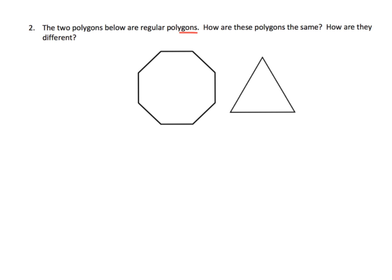It says the two polygons are regular polygons — how are they the same and how are they different? Parents and teachers, this is a fun opportunity to allow your students to differentiate and see how sophisticated they can be in describing these figures. For the purposes of this lesson, how are they the same? Well, both figures are made up of equal sides. One has eight equal sides and the other has three equal sides — I'm not saying those sides are the same length as each other, just that each figure has all equal sides. How are they different? One has eight sides and the other has three. Enjoy the conversation that comes out of this question.